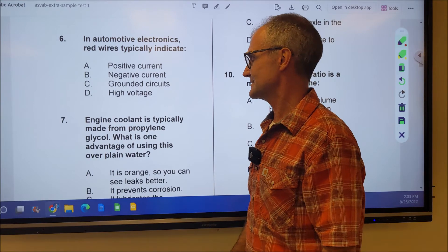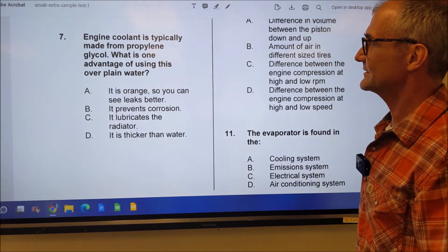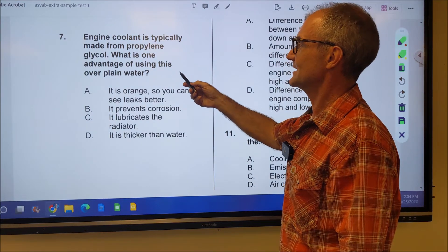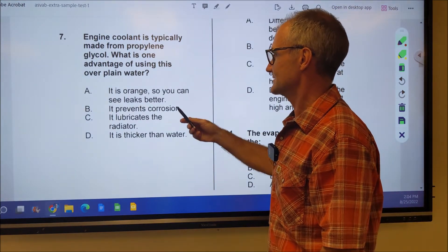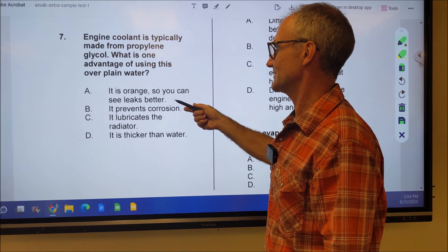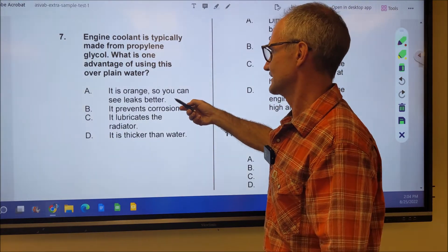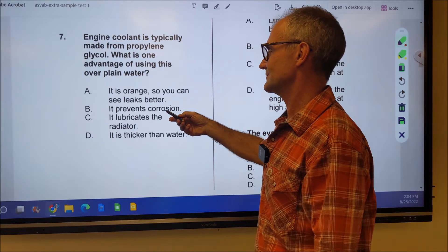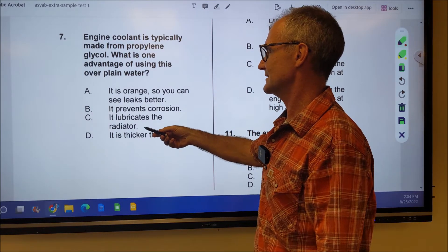Number seven, engine coolant is typically made from propylene glycol, which advantages does it have over water? It's orange, so you can see leaks better. I don't know if I've ever seen leaks easier. It prevents corrosion. That's absolutely true. It lubricates the radiator. I don't know why the radiator would need lubrication. That doesn't make any sense.